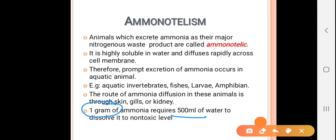So ammonia is only excreted by aquatic animals like fishes, larvae, and amphibians which spend most of their time in aquatic life. They excrete their waste product through the skin, gills, or kidney.